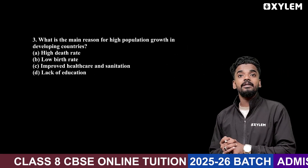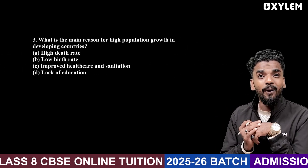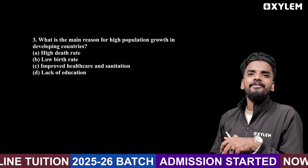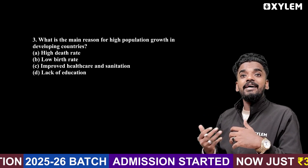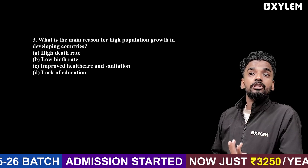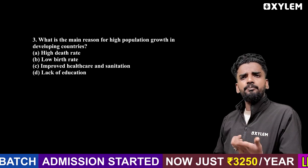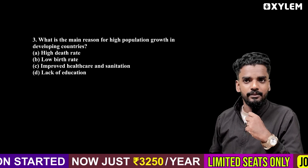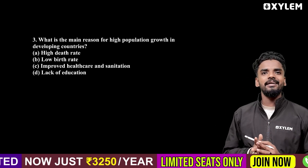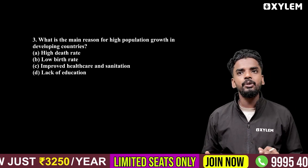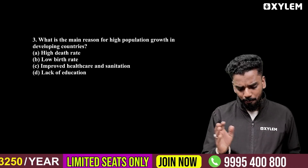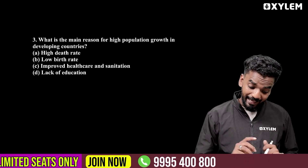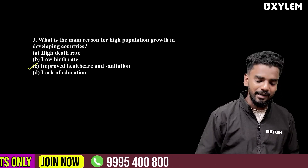The third question: what is the main reason for high population growth in developing countries? High death rates and low birth rates are not the right answer. The reason is improved health care and sanitation — that is the right answer.